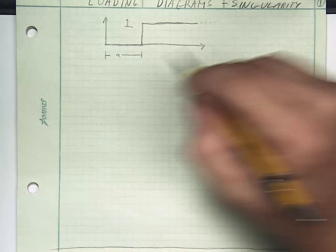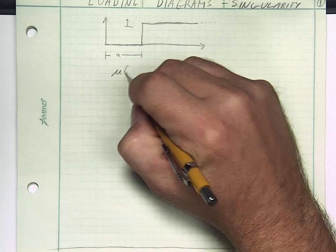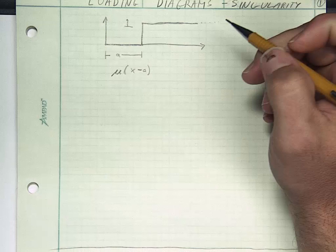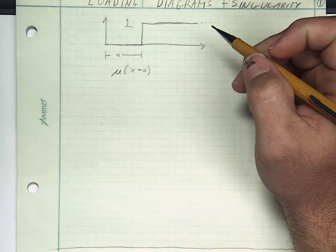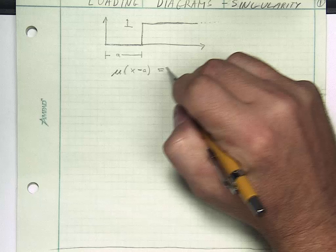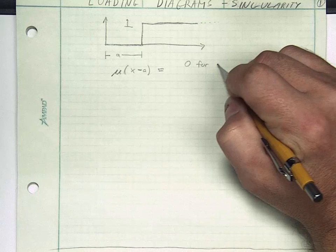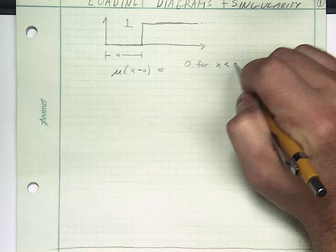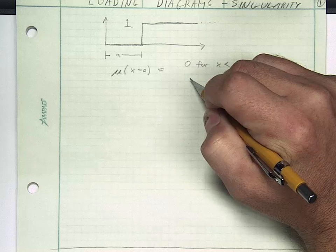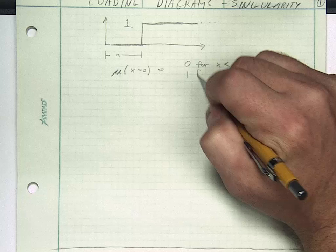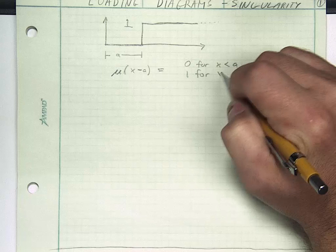The notation that you might have seen before would look something like this: mu of x minus a. And what this means is literally 0 for x is less than a, and 1 for x is greater than a.